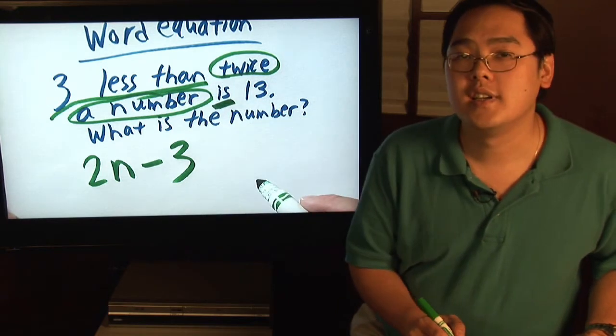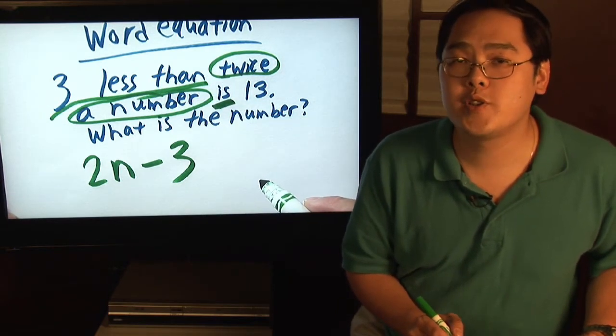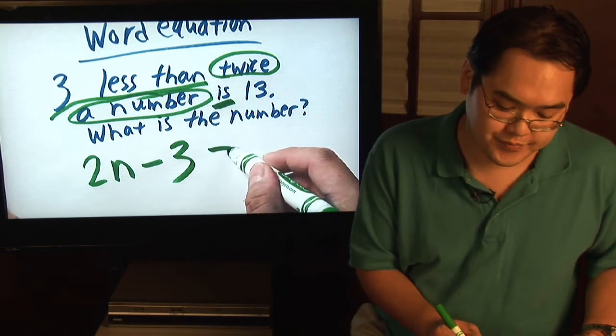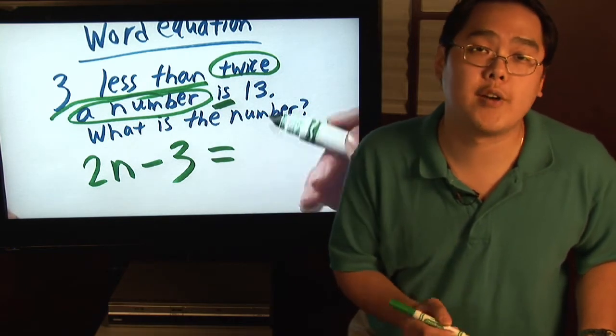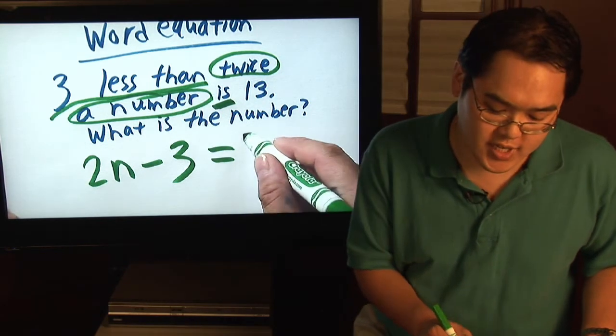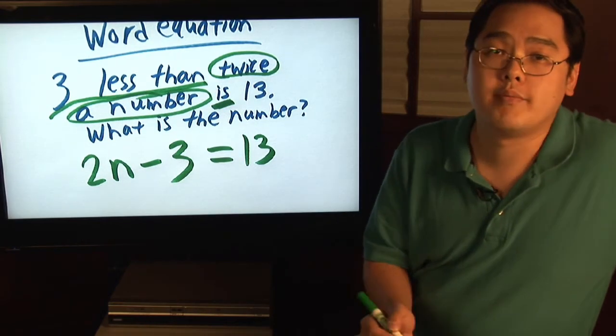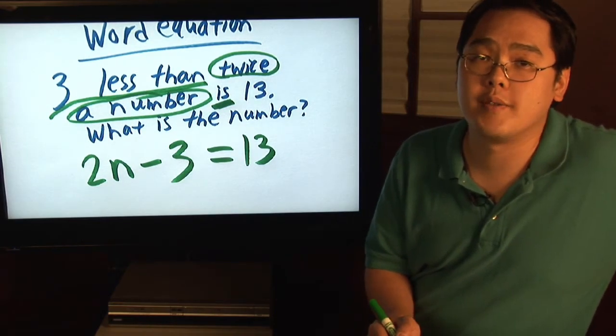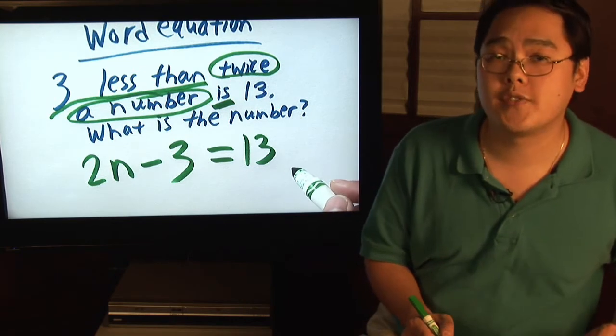Is. Is is always going to be the equal sign, always. And of course, you now know what number is on the other side, which is 13. So what is the number? Well, it's your job now to basically solve for it.